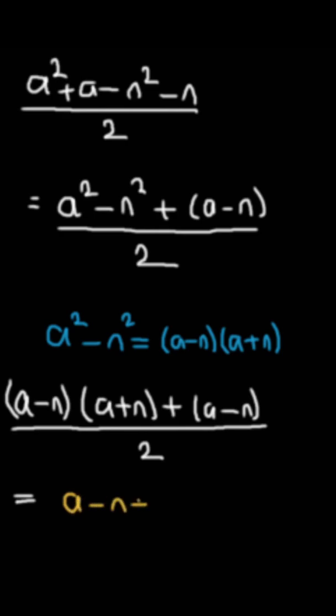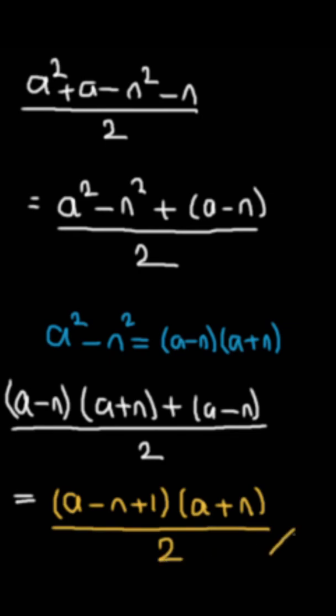But we know A minus N is common. So, if we do common factoring, we get our perfect result, which is A minus N plus 1 multiplied by A plus N divided by 2.